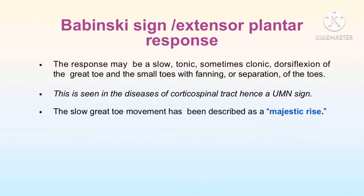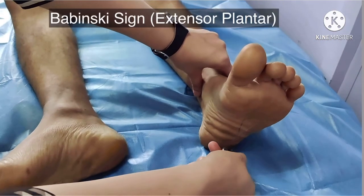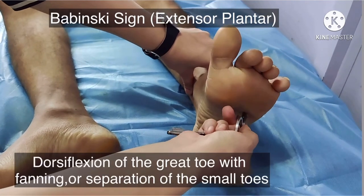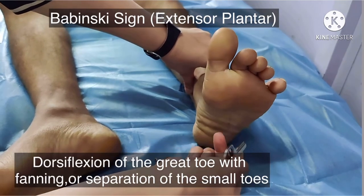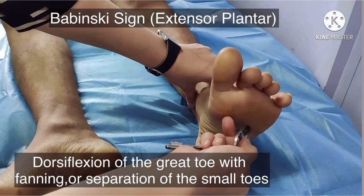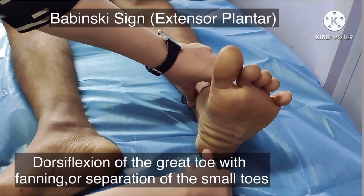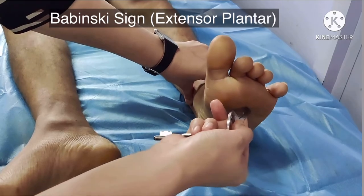The Babinski sign or extensor plantar response may be a slow tonic or sometimes clonic dorsiflexion of the great toe, with fanning or separation of the toes. This is seen in diseases of the corticospinal tract and hence it is a reliable upper motor neuron sign. The slow great toe movement has also been described as a majestic rise. In a patient with corticospinal tract disease, the Babinski sign is characterized by dorsiflexion of the great toe with fanning or separation of the small toes.